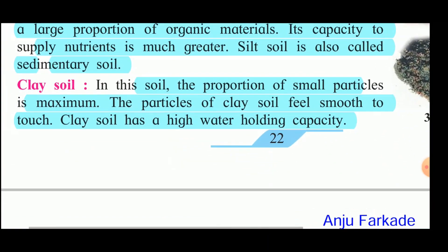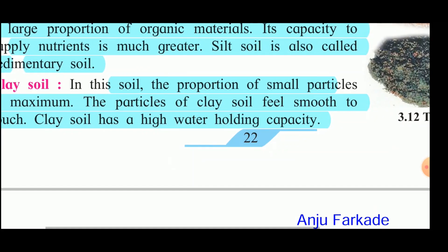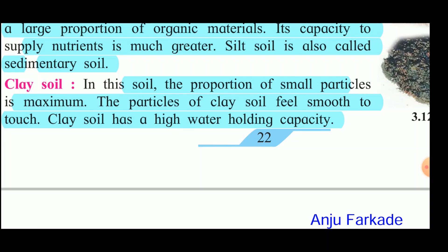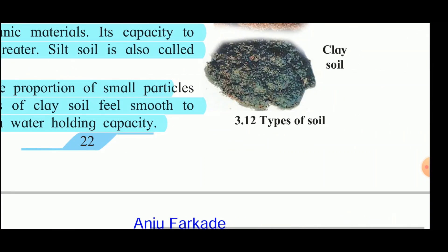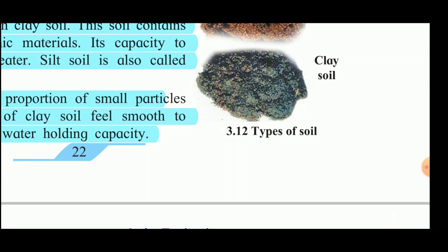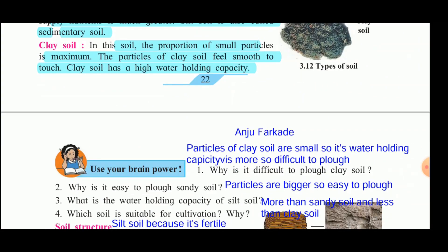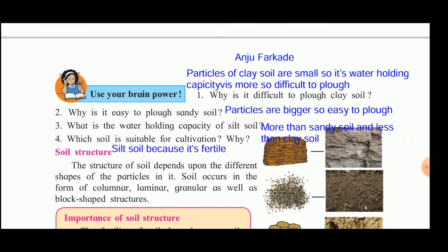In clay soil, the proportion of small particles is maximum. Particles of clay soil feel smooth to touch and it has a high water-holding capacity. However, clay soil cannot be used in agriculture because if the water-holding capacity is too large, the roots of plants rot easily. Why is it difficult to plow clay soil? Because its particles are small, its water-holding capacity is high, making it difficult to plow. Sandy soil, with bigger particles, is easy to plow.